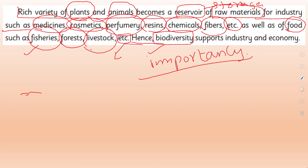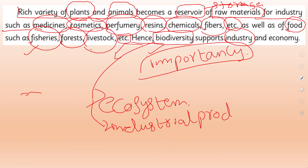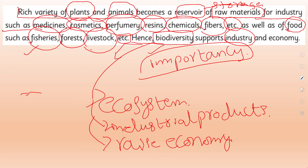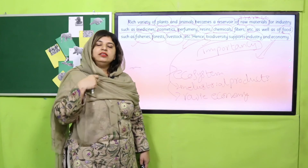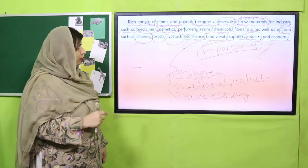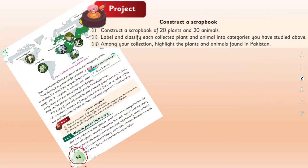So the importance of biodiversity is that it creates and develops an ecosystem. We can also get many different industrial products from different life forms. These products raise our economy — our wealth and income returns to the country. The amount of reserves and variations of living forms in the world can raise the products we get from them and raise our economy.